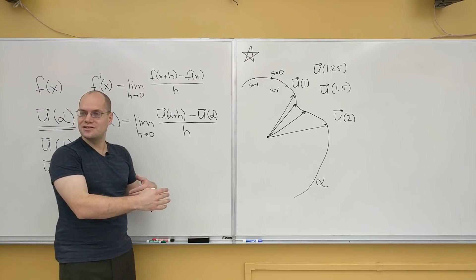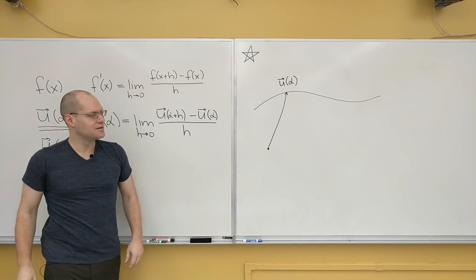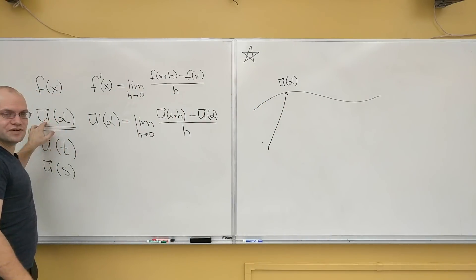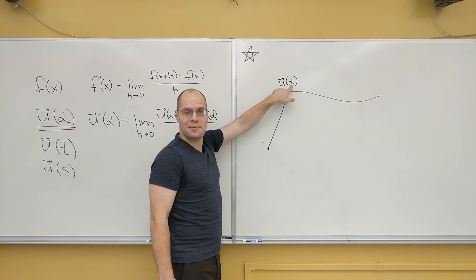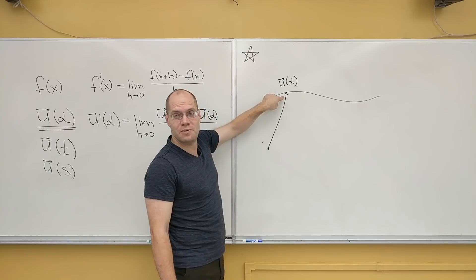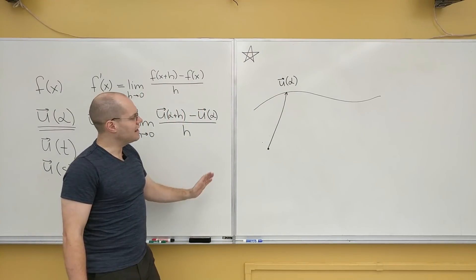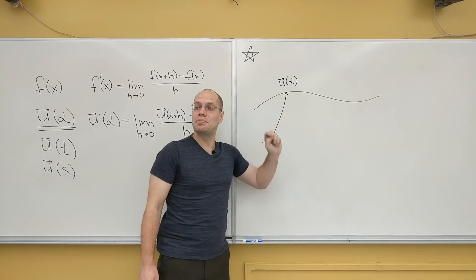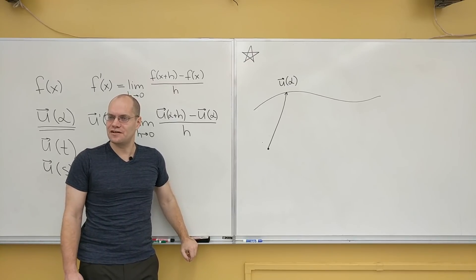We'll conclude that it's the tangent. Let me talk while I'm drawing it. Here is our curve that corresponds to u vector of alpha. Here is an arbitrary value of the parameter alpha, and here's the vector corresponding to it. In this interpretation, in this setting, u of alpha is actually called the position vector.